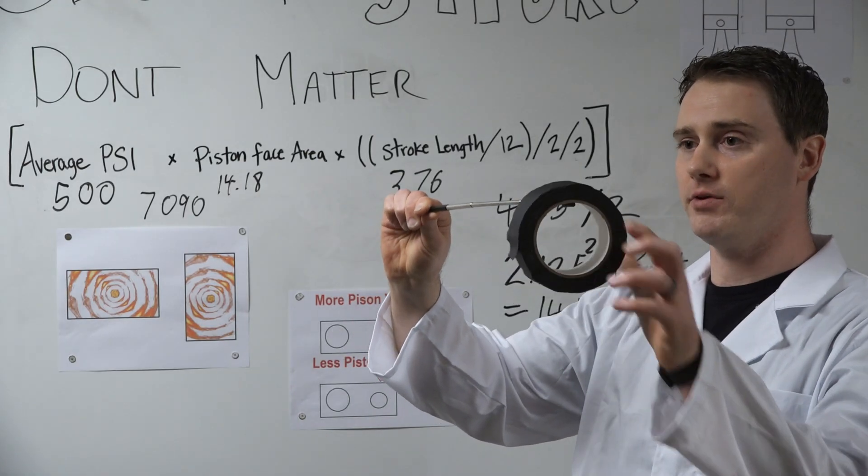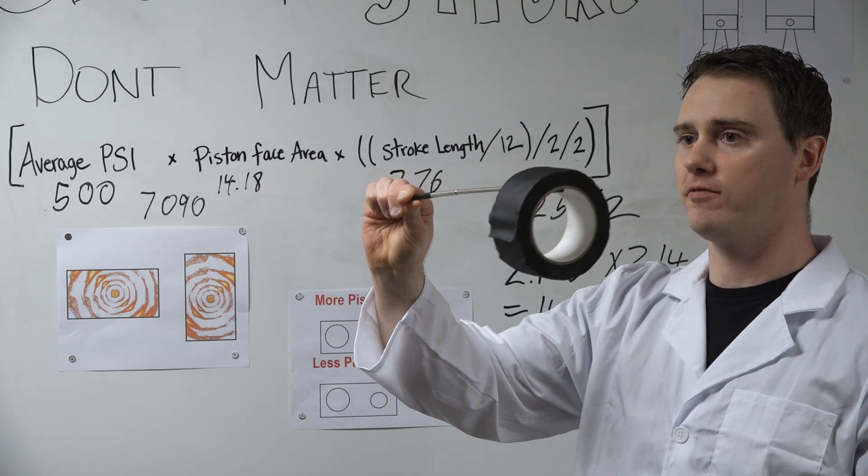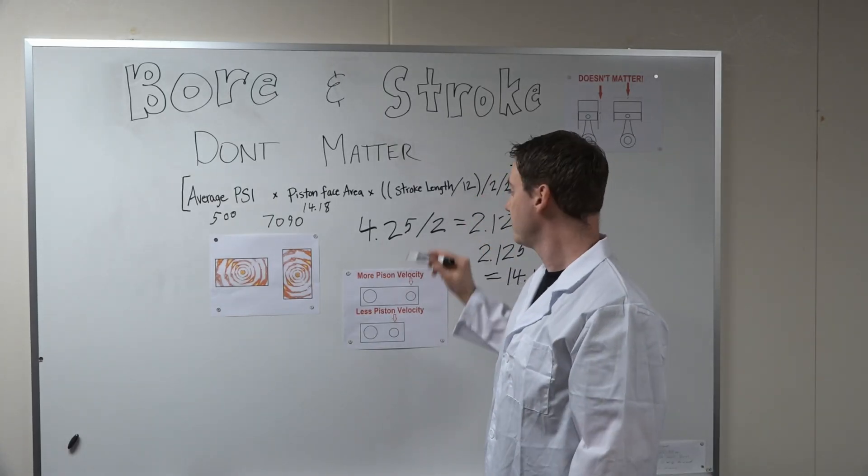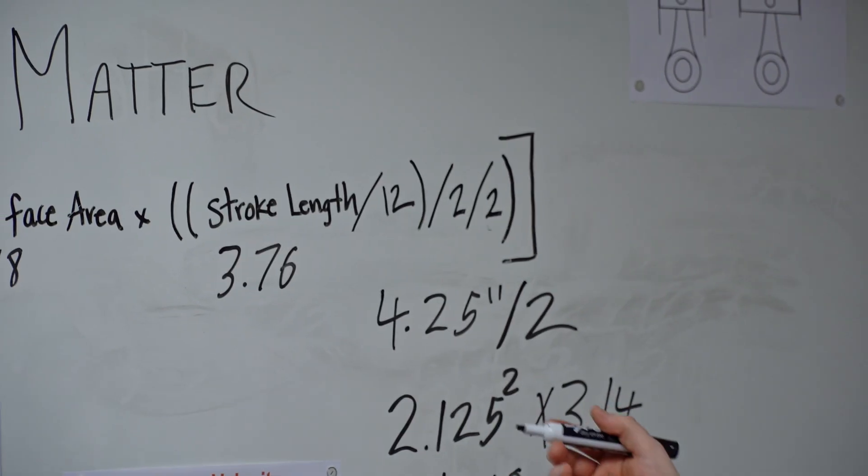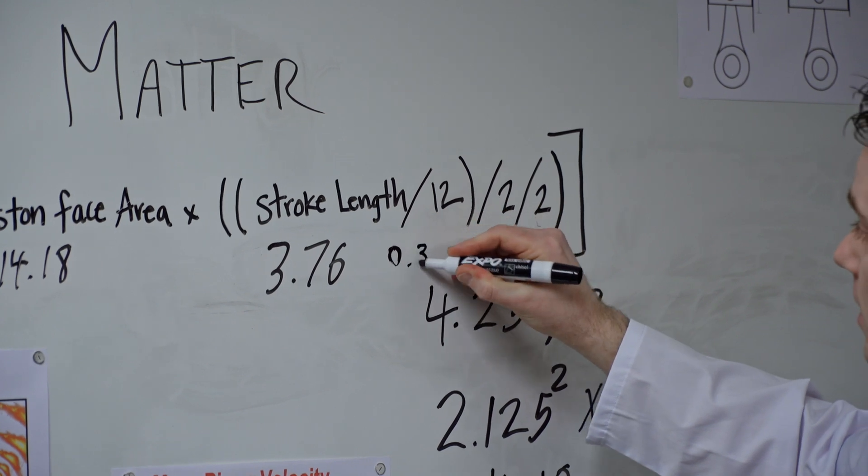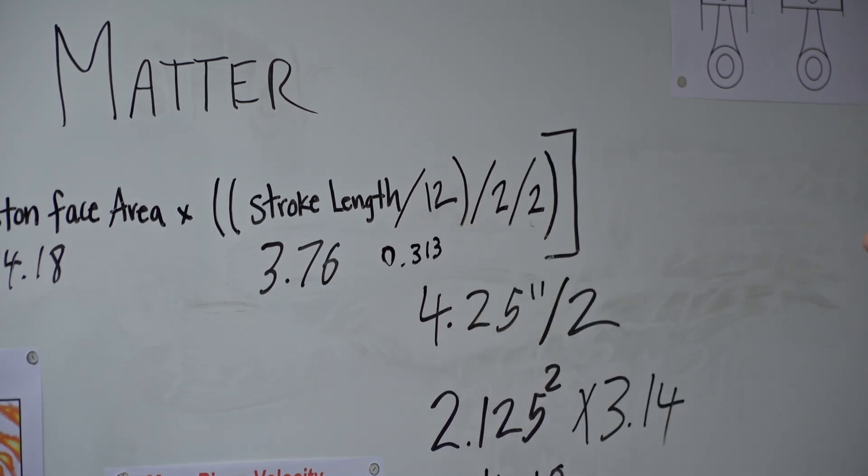So every single pound of force would be one foot pound. You see, one foot pound is a leverage point 12 inches long with one pound on the end of it. But since our crankshaft isn't 12 inches long, we divide 3.76 by 12. So 3.76 divided by 12 is 0.313 repeating.